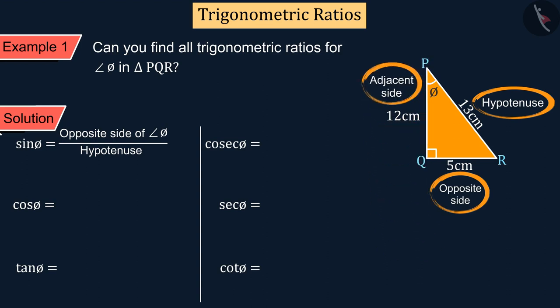So, by substituting the values of the opposite side and the hypotenuse, we get sin phi equals to 5 upon 13.